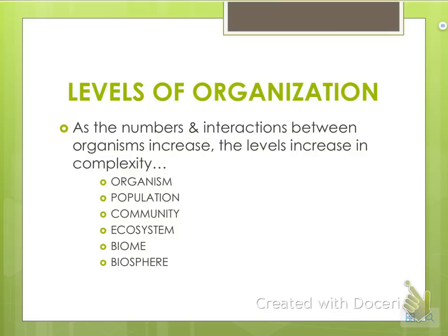The levels of organization go from smallest to largest. The smallest thing is an organism. Then a group of the same organisms is a population. A community is different populations. An ecosystem has different communities. A biome is many similar ecosystems. And the biosphere is basically the entire planet.